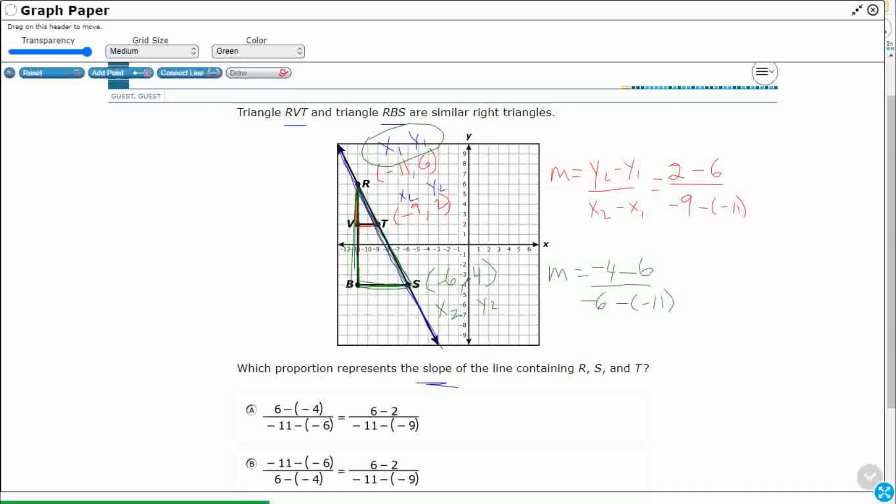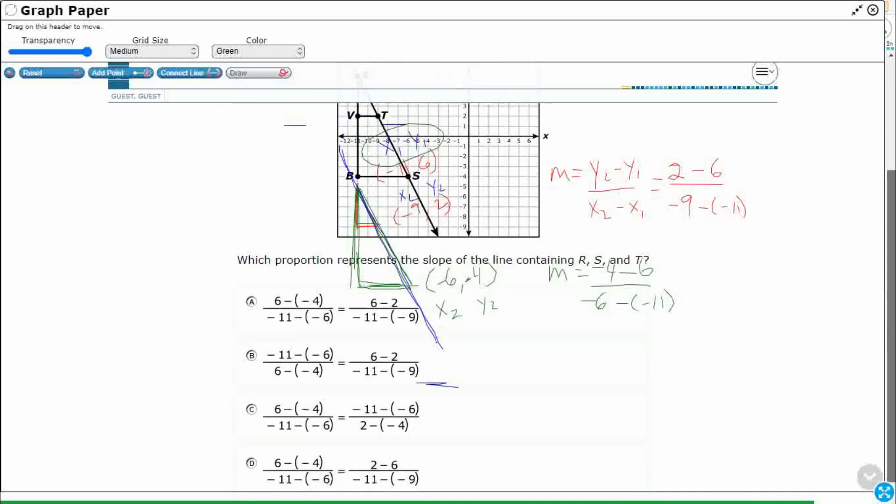All right. So theoretically, right, it's one line. So I could put these together, right? And I could say, I'm going to put this one first and then equals. And then I'll just transfer this up there. Negative 4, negative 6, negative 6 minus negative 11. Do I have one that looks exactly like that?